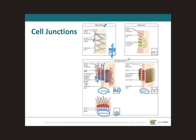Next are hemidesmosomes. 'Hemi' means half, so a hemidesmosome looks like half of a desmosome. Instead of attaching the membranes of adjacent cells, it attaches the basal part of an epithelial cell's membrane to the basal lamina. While hemidesmosomes are similar in appearance to desmosomes, they use the adhesion protein integrin instead of cadherin.